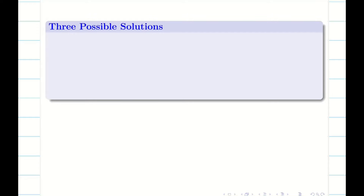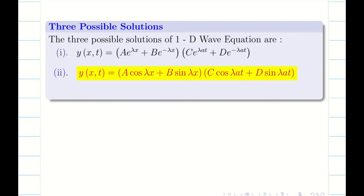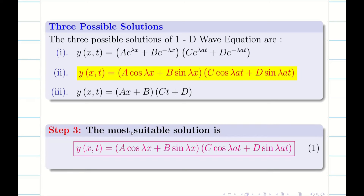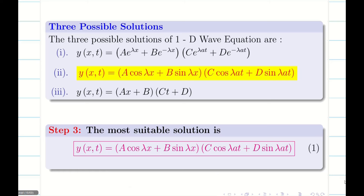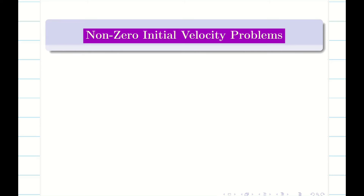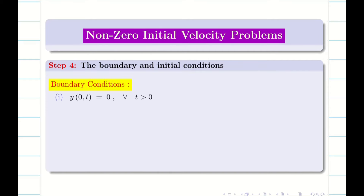For step 3, we have to write the most suitable solution. We know there are 3 possible solutions for the wave equation, but we don't need to write all in exams — this is for your understanding and helpful for MCQs. Step 3: the most suitable solution is y = (A cos λx + B sin λx)(C cos λat + D sin λat). I am going to take this as equation 1.